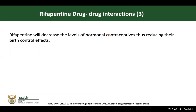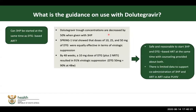Rifapentine decreases levels of hormonal contraceptives. We should avoid it unless the woman, in addition to hormonal contraceptives, also uses other forms of prevention like IUCDs and condoms.